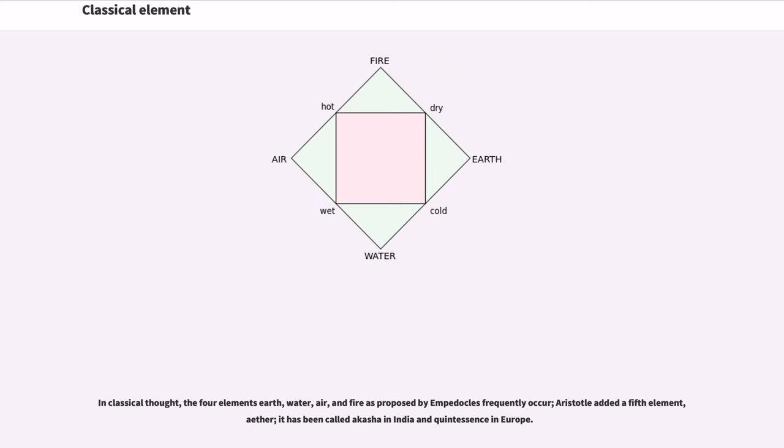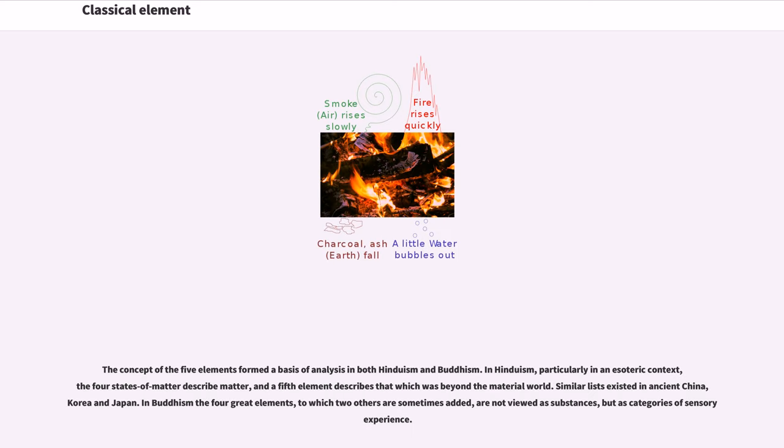In classical thought, the four elements earth, water, air, and fire as proposed by Empedocles frequently occur. Aristotle added a fifth element, ether, it has been called akasha in India and quintessence in Europe. The concept of the five elements formed a basis of analysis in both Hinduism and Buddhism. In Hinduism, particularly in an esoteric context, the four states of matter describe matter, and a fifth element describes that which was beyond the material world.